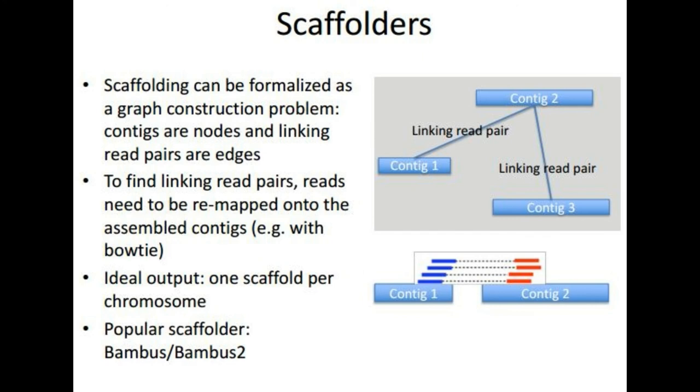Scaffolding can be formalized as a graph construction problem where the contigs are nodes and linking the read pairs are edges. To find the linking read pairs, reads need to be remapped onto the assembled contigs. This can happen with a software like Bowtie. And an ideal output from this should be one scaffold per chromosome, and we get a reordered contig from this.